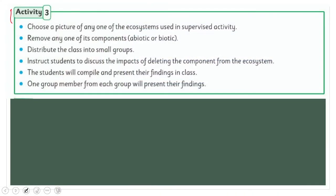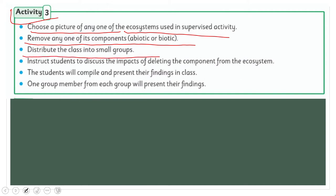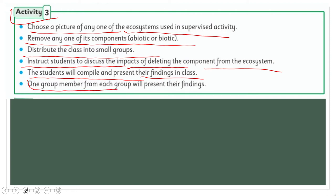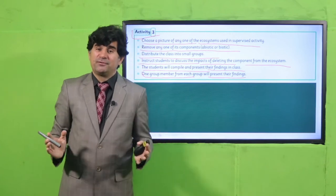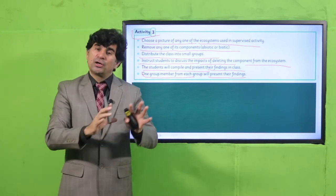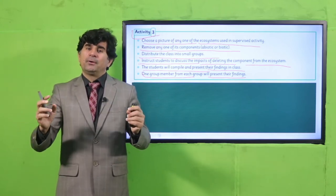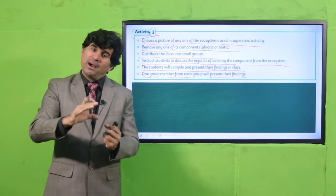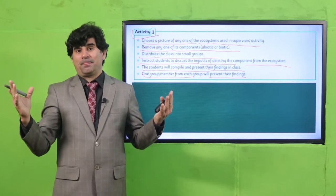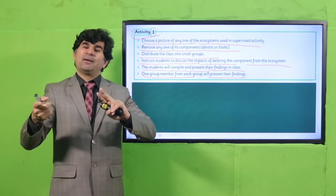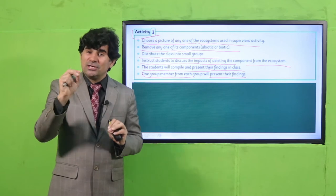My dear students, Activity Number 3: Choose a picture of any one ecosystem used in a supervised activity, remove any one of its components — biotic and abiotic. Distribute the class into small groups and instruct students to discuss the impact of deleting that component from the ecosystem. For example, from any ecosystem, if you delete water — no water — what will be its impact on plants, what will be its impact on animals, and what will be its impact on human beings? These three things you need to write.